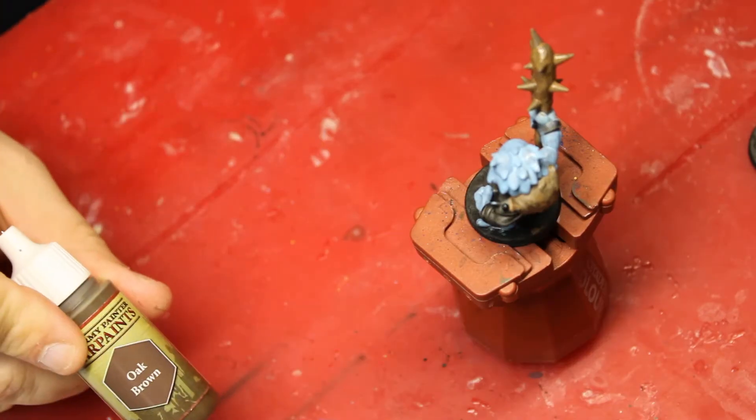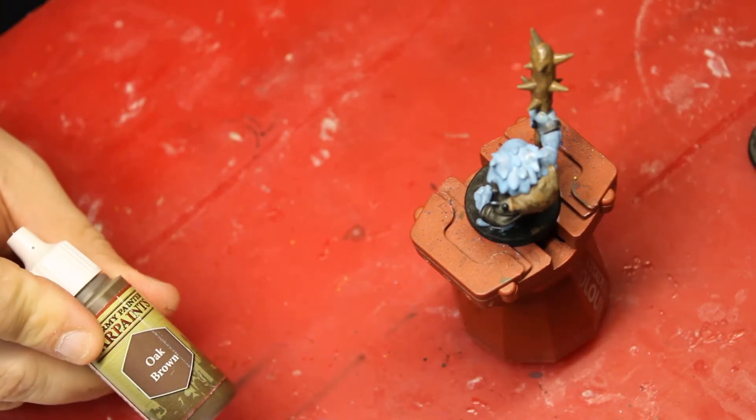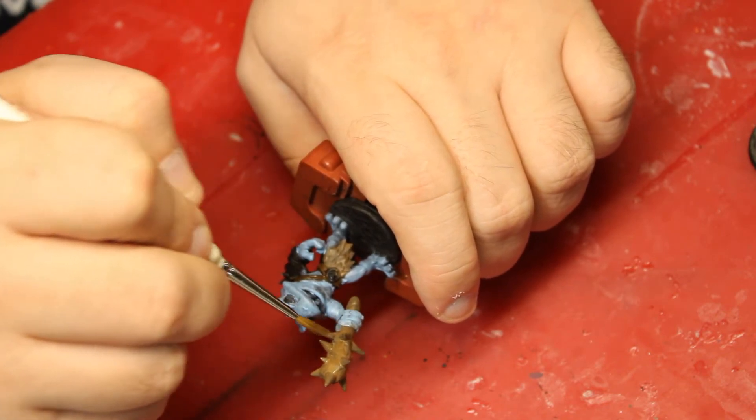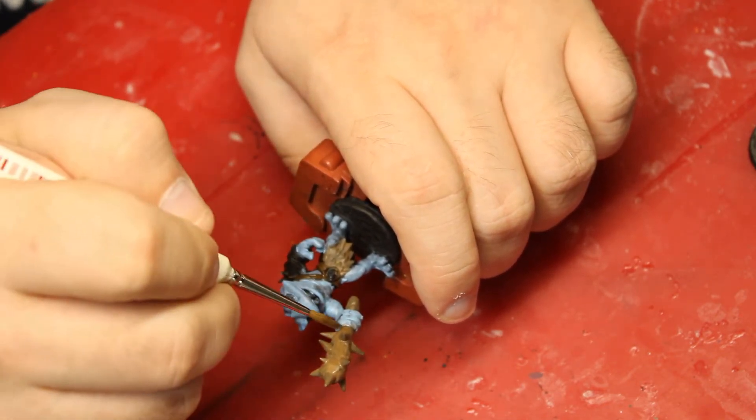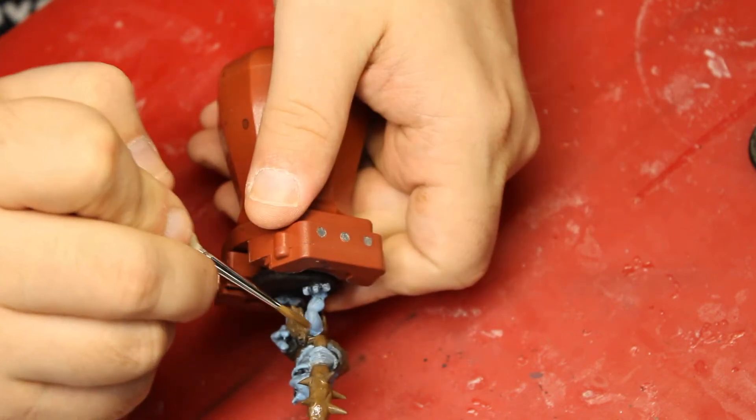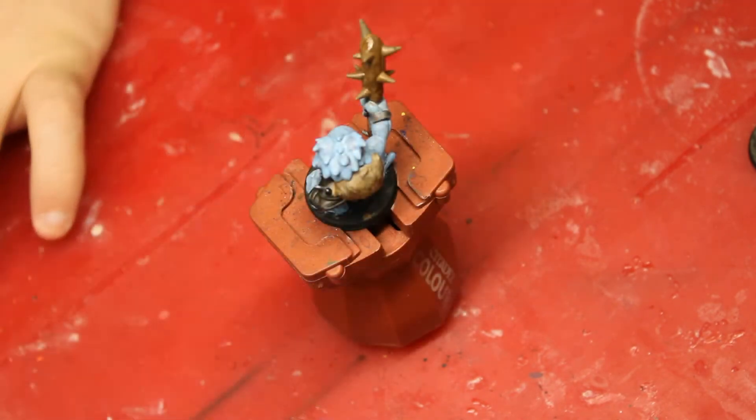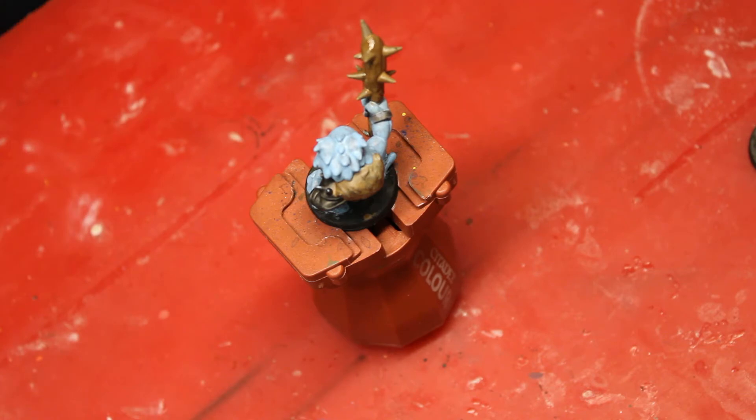I then come in with Oak Brown, which I'm going to use to darken the weapon down and make it look more like a wooden cloth than a leather cloth. What I do here as well is I make sure that I also hit his belt and his